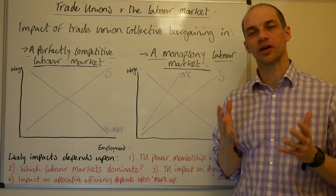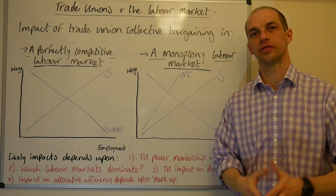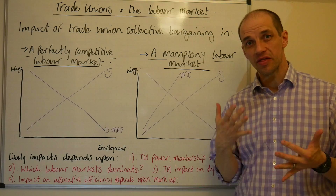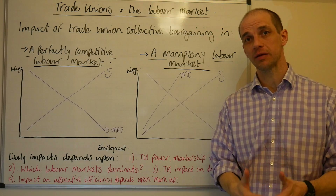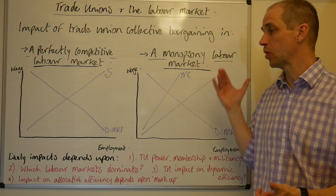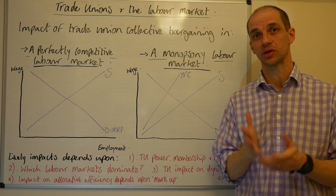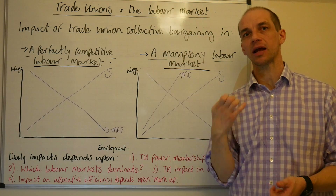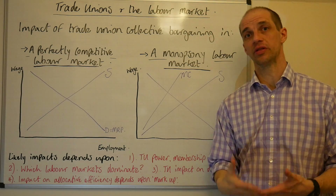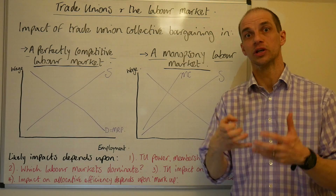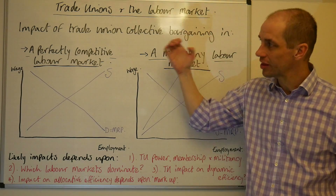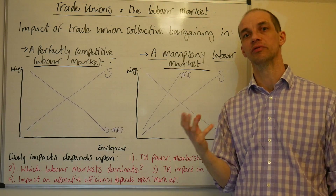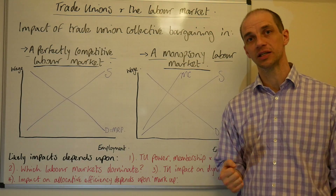Hi everyone. In this lesson we're going to get to grips with the impact of trade unions and their collective bargaining, and the potential impact this could have on a competitive labour market — a perfectly competitive labour market — as well as a monopsony labour market where we're facing the sole buyer of labour. Just to remind ourselves, trade unions act on behalf of members to try and further the interests of unionised employees. One of the key ways they do this is via collective bargaining, where together they have a far greater voice and greater negotiating power.